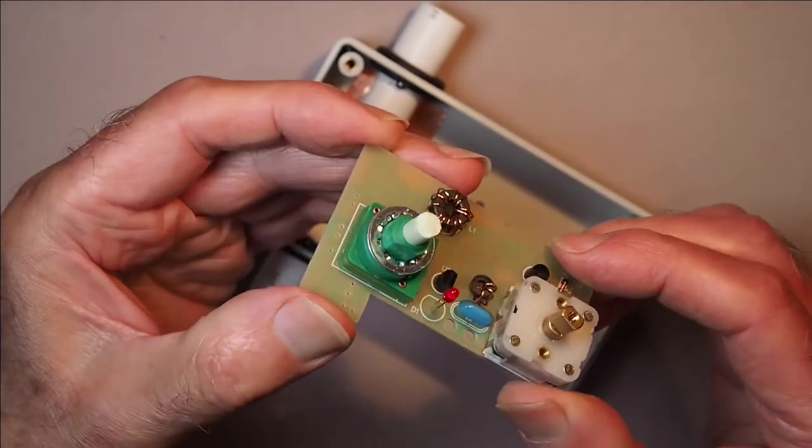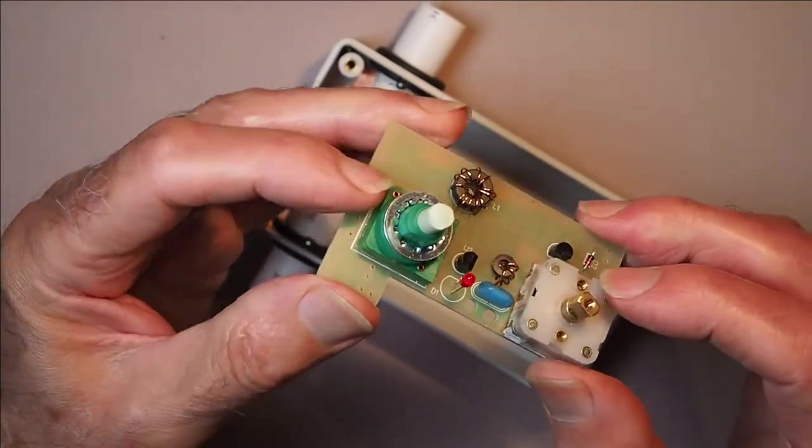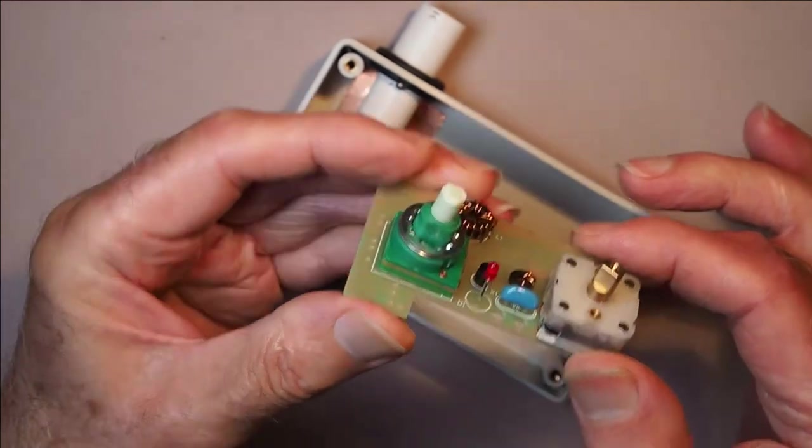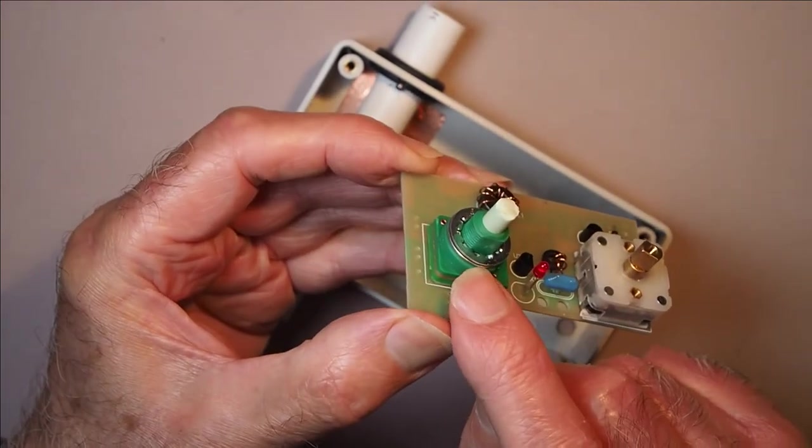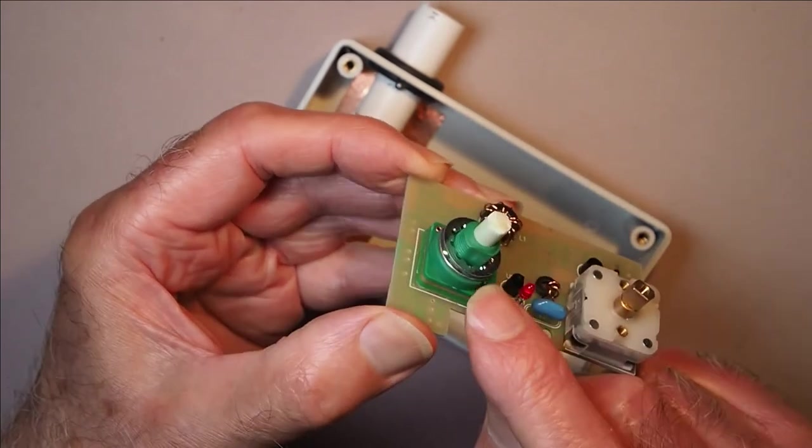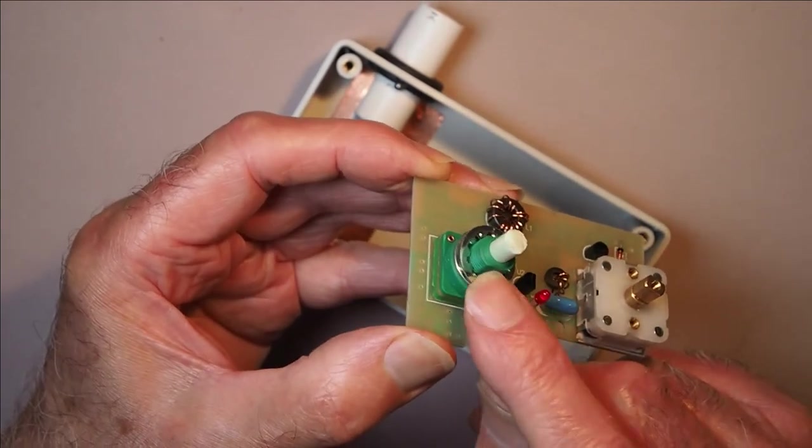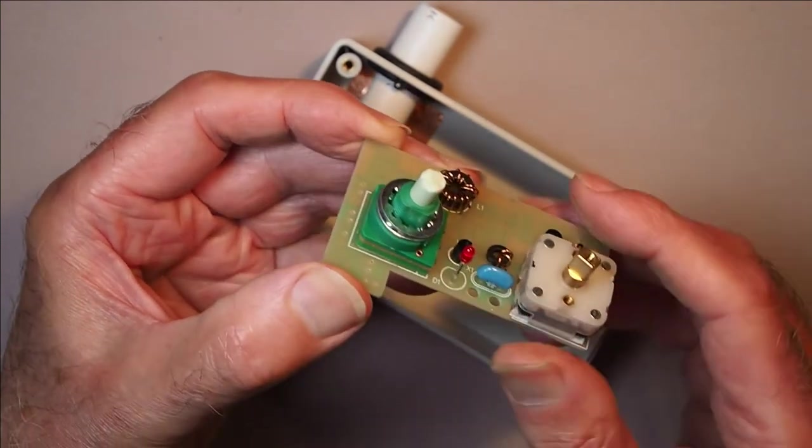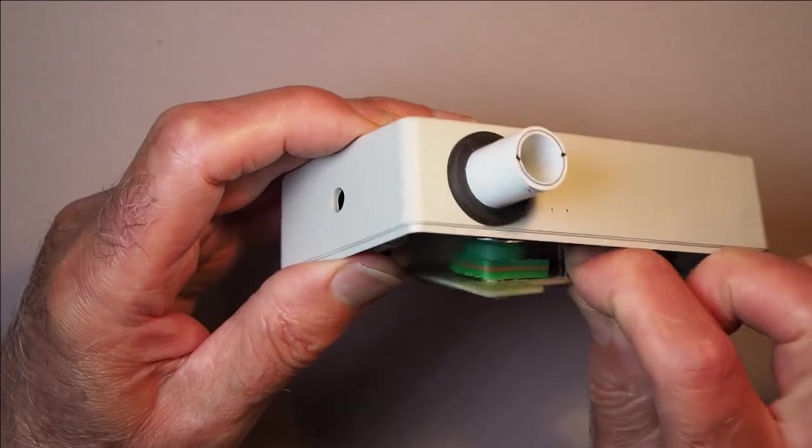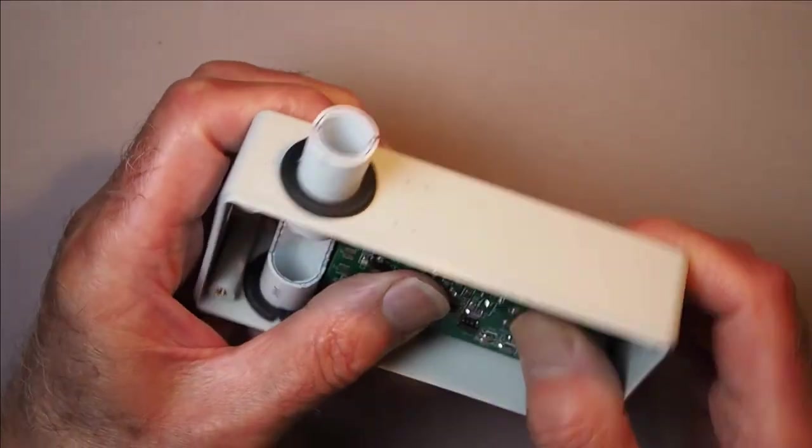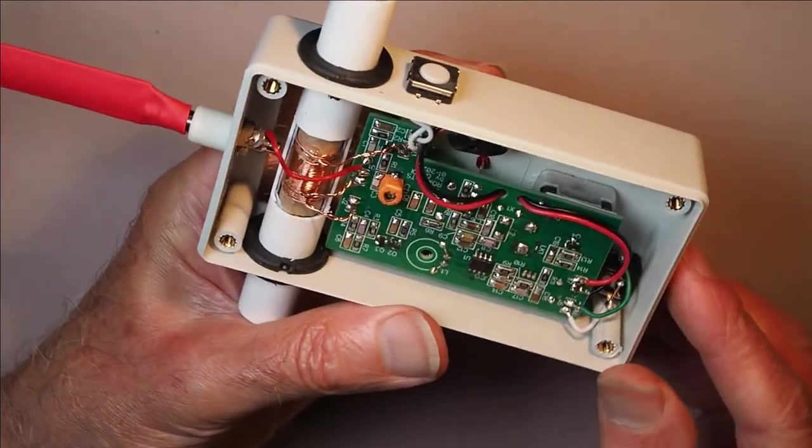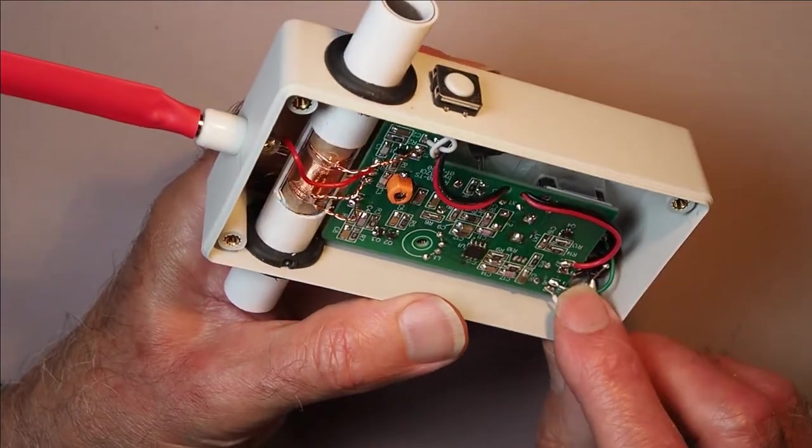So now all that remains is to drop the PCB into the box. And you might find that you need a couple of washers or another nut on the control pot to level up the board in the box, like so.